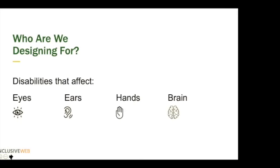Where we're coming from — who are we designing for? When it comes to the digital space, we are designing for disabilities that affect the eyes, ears, hands, and brain. There's an icon associated with each of those. So let's get into eyes.